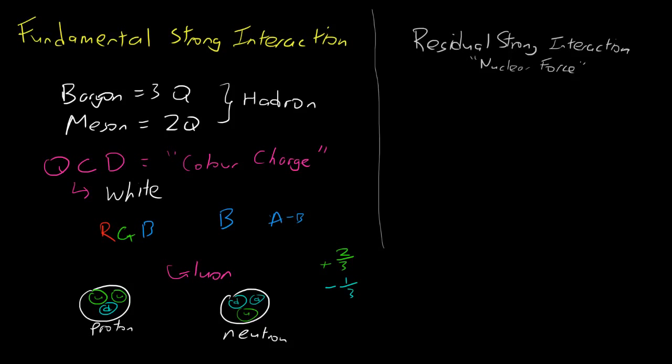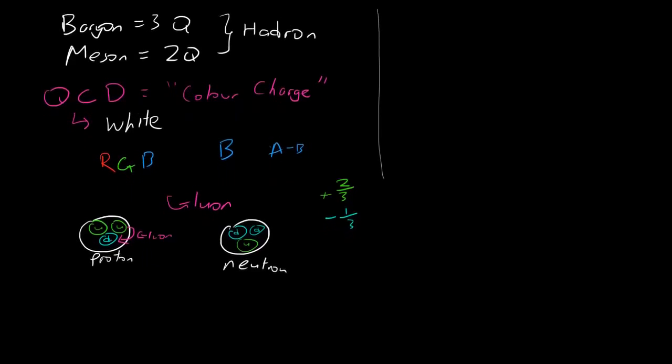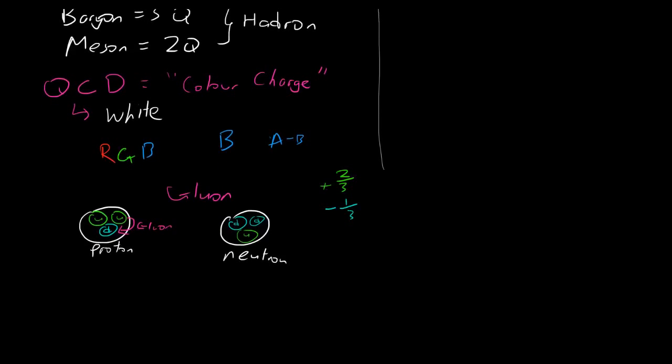And in between these things, what holds them together is a gluon. So a gluon goes between each of them and holds them together. Now the interesting thing about the strong interaction is that the force, unlike the other forces, the strong interaction doesn't decay over distance. Its force, the strength of the force doesn't decay over distance. But there is a limit to this distance. It's about the size of the proton.